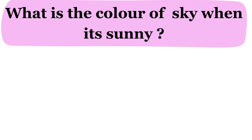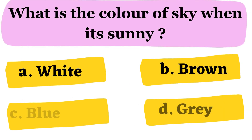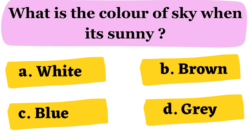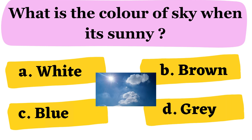Next question. What is the color of the sky when it's sunny? A. White B. Brown C. Blue D. Gray. The correct answer is option C. Blue.